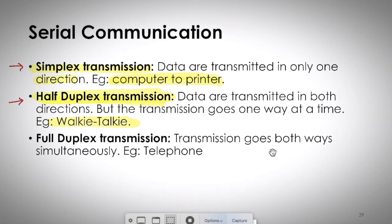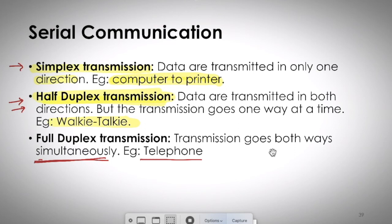In full duplex communication, simultaneous two-way communication is possible. A classic example is a telephone call — you talk while the other person listens, and they can talk at the same time as you listen. These are the three types of communication based on direction and simultaneity.